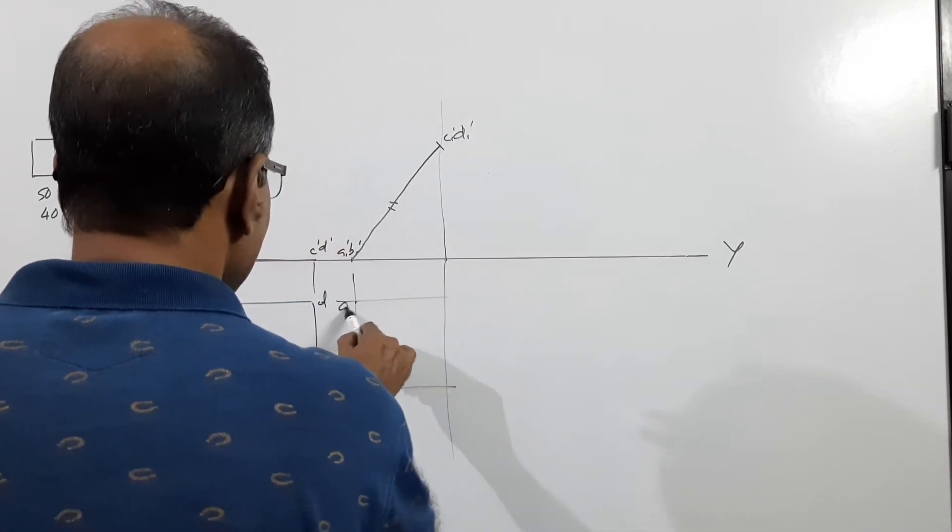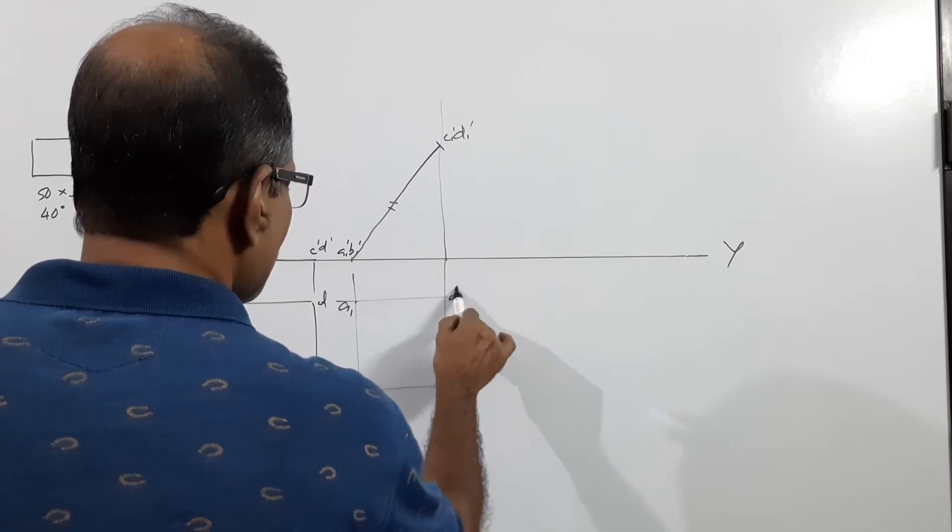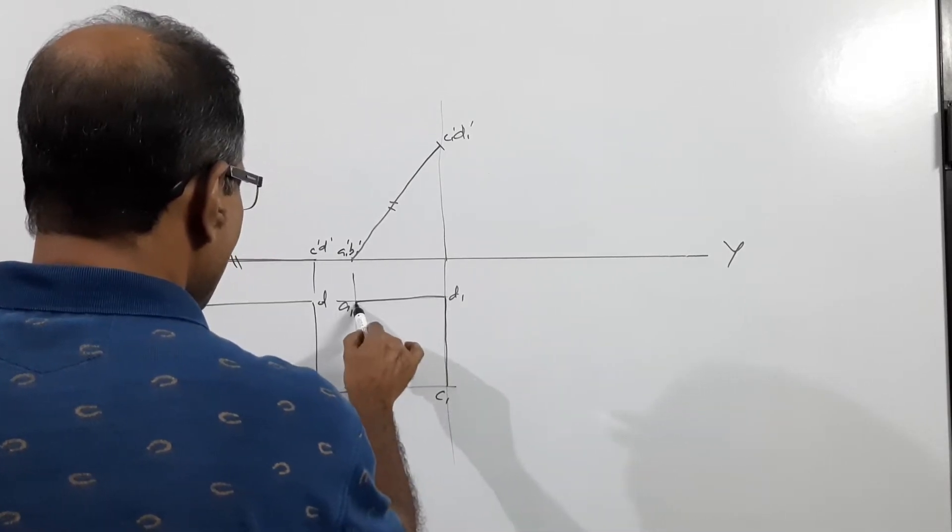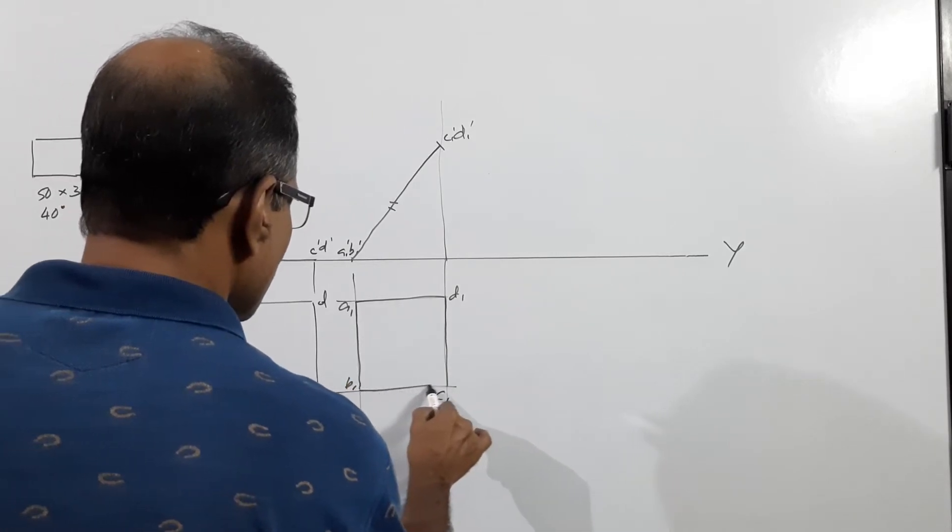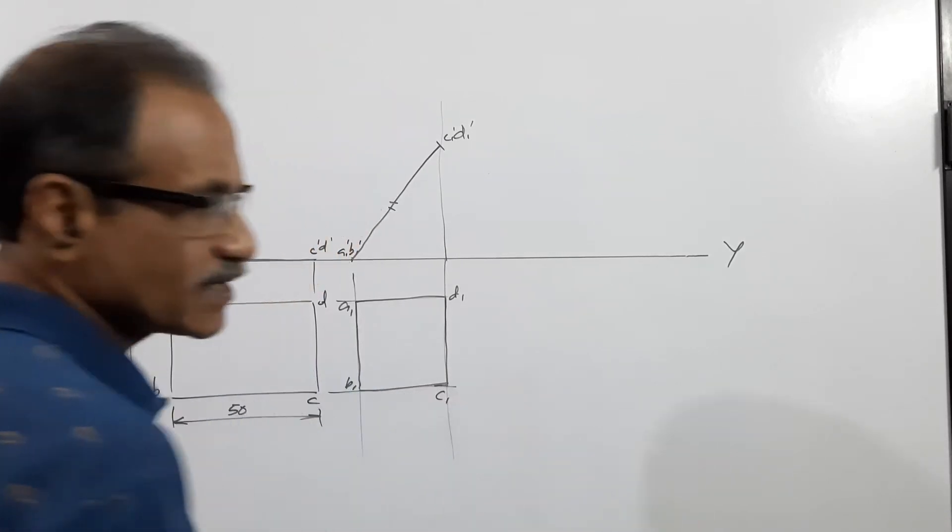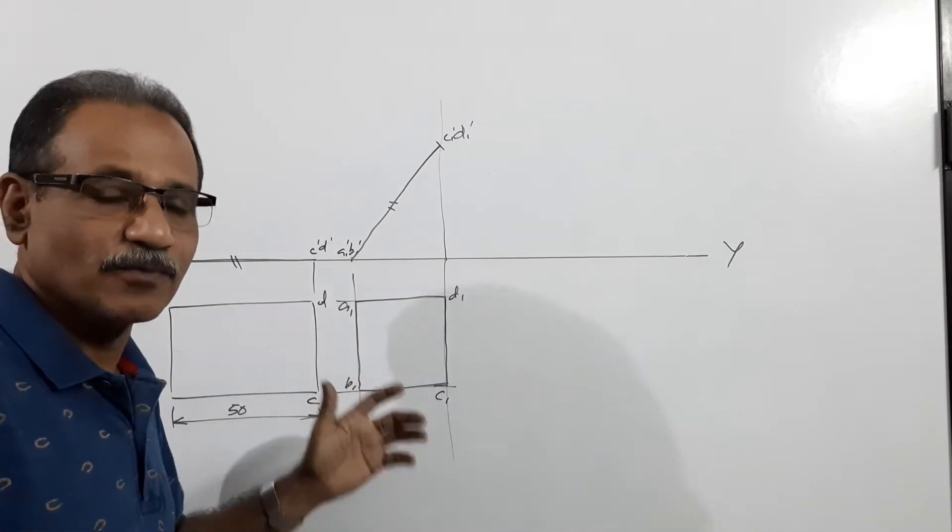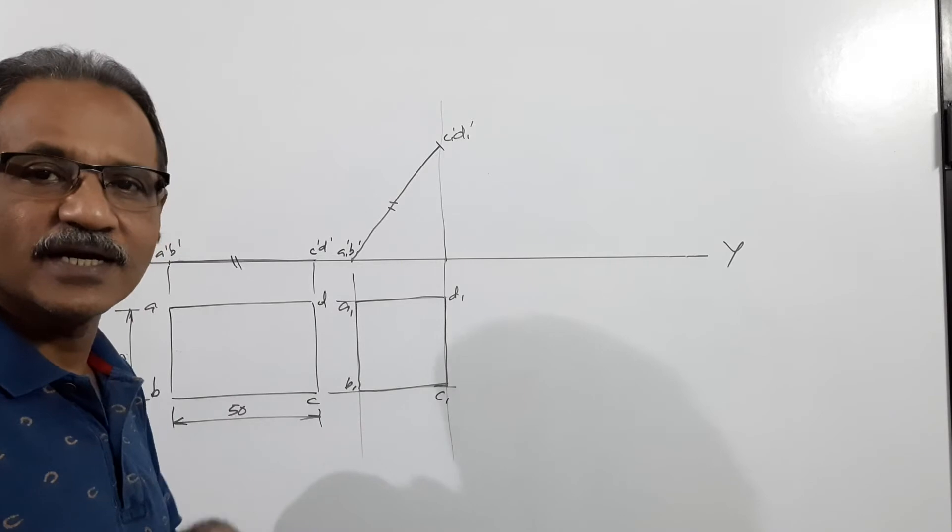C1 dash D1 dash, project the new plan. What's the new plan? New plan is a square of 30 mm size. Now the shorter side is on HP, plan is a square.